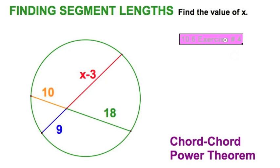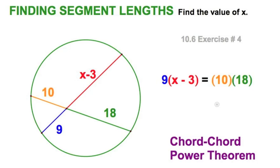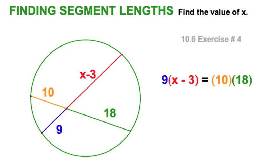Let's move on. Now the next exercise in our textbook, number 4. We're going to do the same thing, chord-chord power theorem, but this time we're going to introduce a variable expression. Just like we did before, in this case we're going to say the red times the blue equals the orange times the green too.